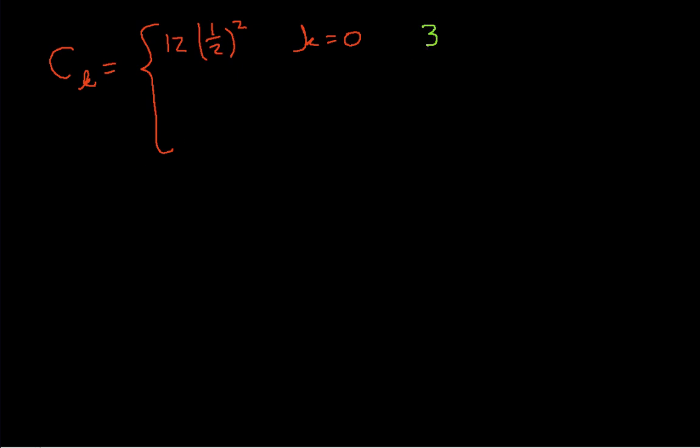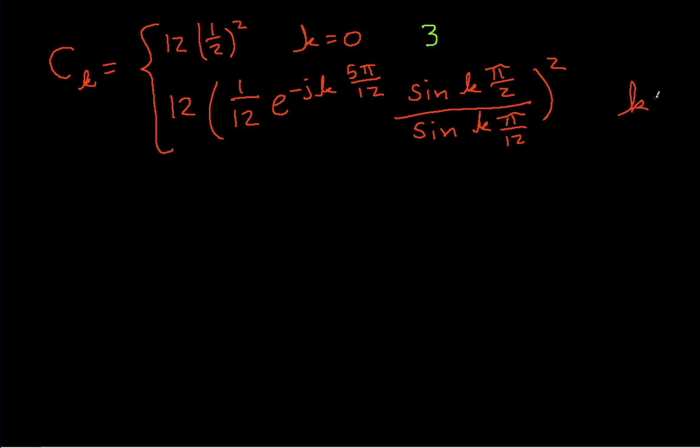When k is not equal to 0, we have 12 times 1 over 12, e to the minus j k, 5π over 12, sine kπ over 2, over sine kπ over 12, quantity squared. So when we work this, and this, again, is for k not equal to 0.